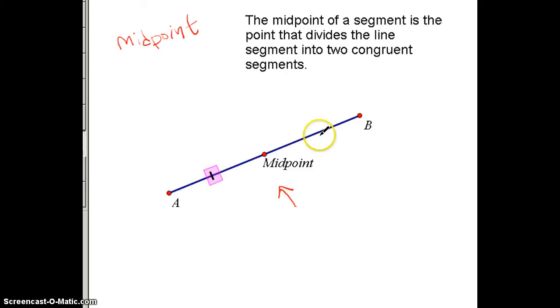So if I see a single tick mark and a single tick mark, I'm going to know that that point is in fact right in the middle because these two parts on the outside are congruent to each other.